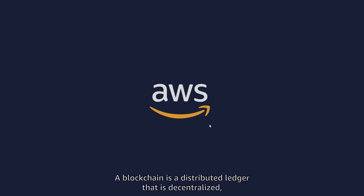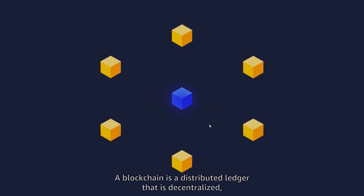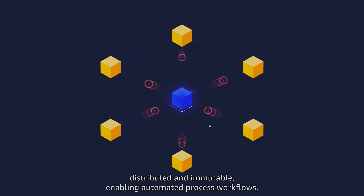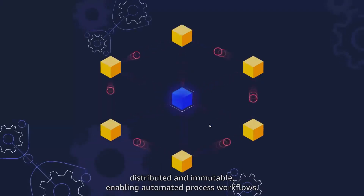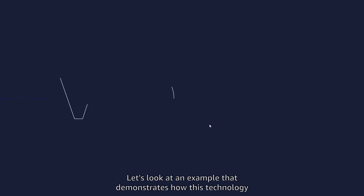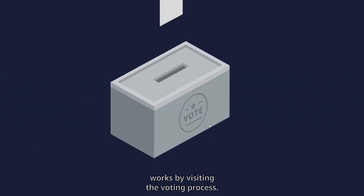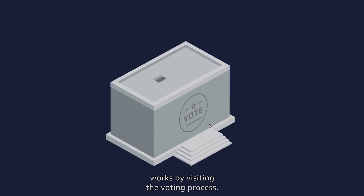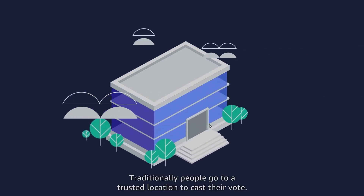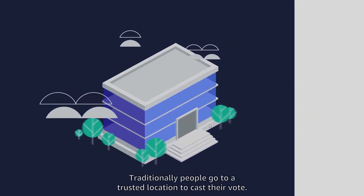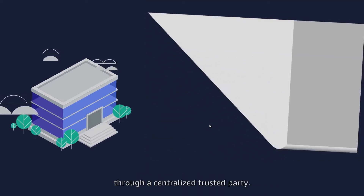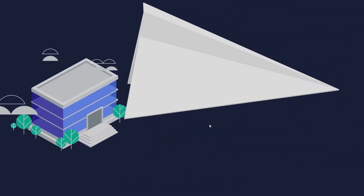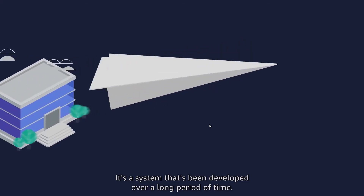Next up, let's look at blockchain. A blockchain is a distributed ledger that is decentralized, distributed, and immutable, enabling automated process workflows. Let's look at an example that demonstrates how this technology works by visiting the voting process. Traditionally, people go to a trusted location to cast their vote and mark their ballot, which is submitted to a centralized system that's been developed over a long period of time.